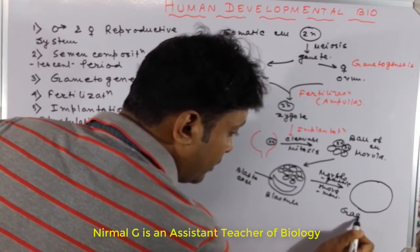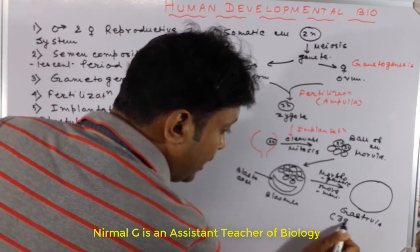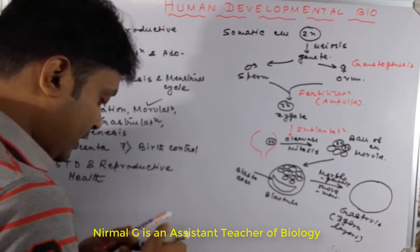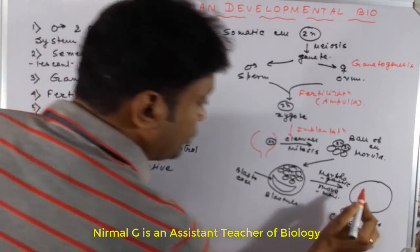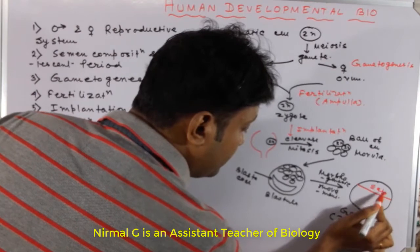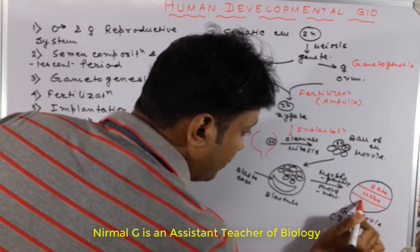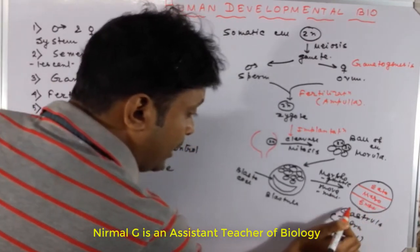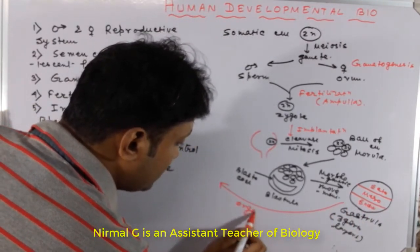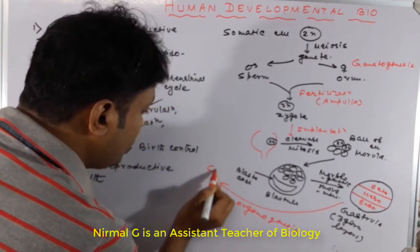The cells of the blastocyst undergo morphogenetic movement, and by morphogenetic movement they produce the gastrula. The gastrula contains three germ layers: ectoderm, endoderm, and mesoderm.